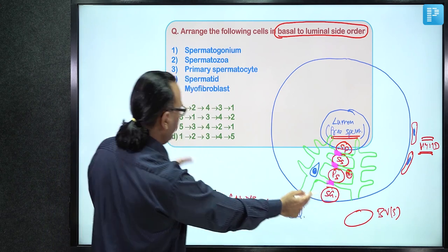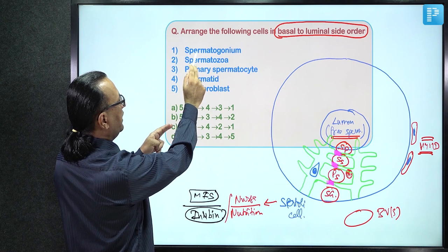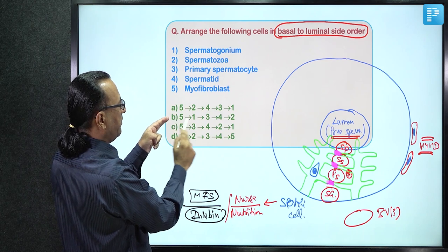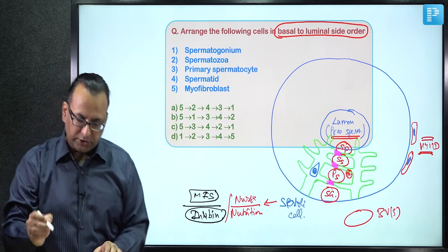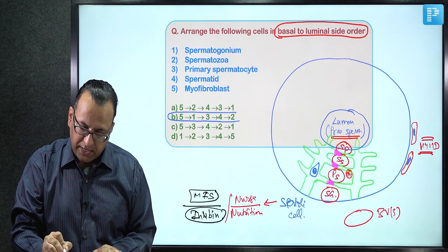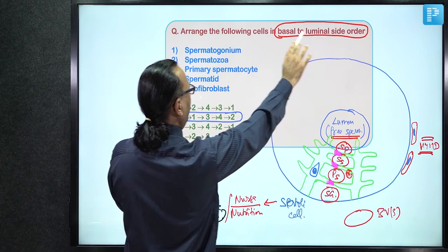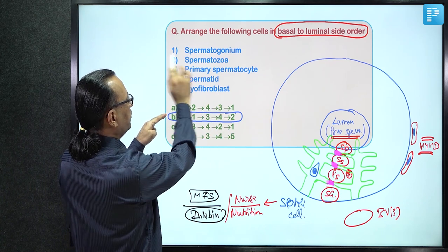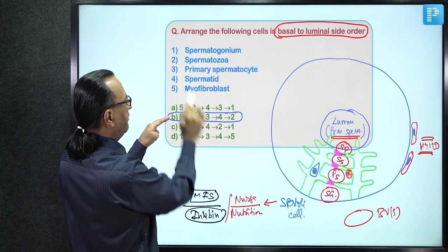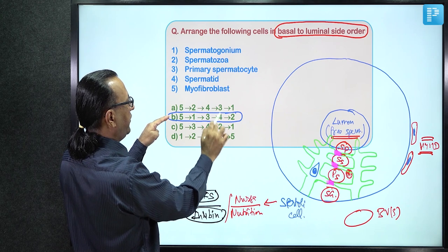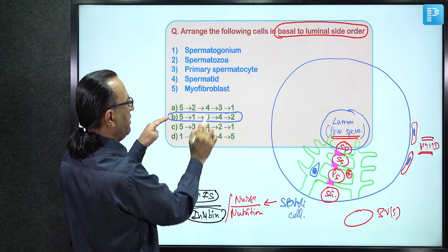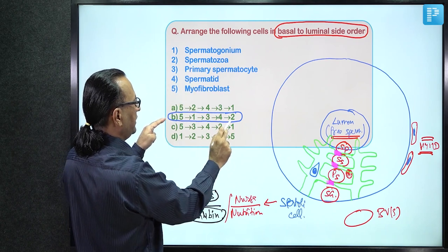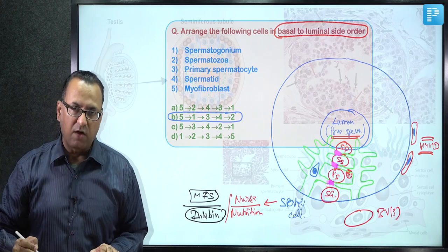After myoid cell (5), the next is spermatogonium (1) — searching for options where 5 is followed by 1, Choice B fits. Choice B sequence: 5 (myofibroblast) → 1 (spermatogonium) → 3 (primary spermatocyte) → 4 (spermatid) → 2 (spermatozoa toward the lumen). Answer: Choice B.